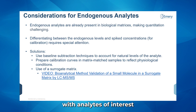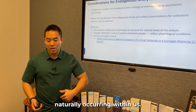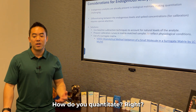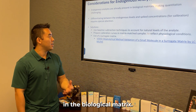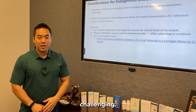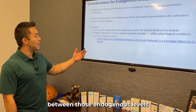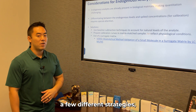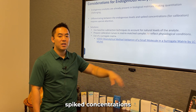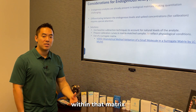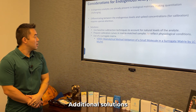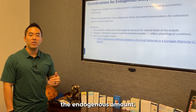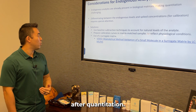We often have clients that approach us with analytes of interest that are endogenous, meaning they are naturally occurring within us. So how do you distinguish those differences and quantitate? Endogenous analytes are already present in the biological matrix, which makes quantitation challenging. A few strategies exist. One is spiked concentrations — you can spike in known amounts within that matrix and take that additive effect for quantitation. Another is baseline subtraction, where if you know the endogenous amount, you can subtract that after quantitation.